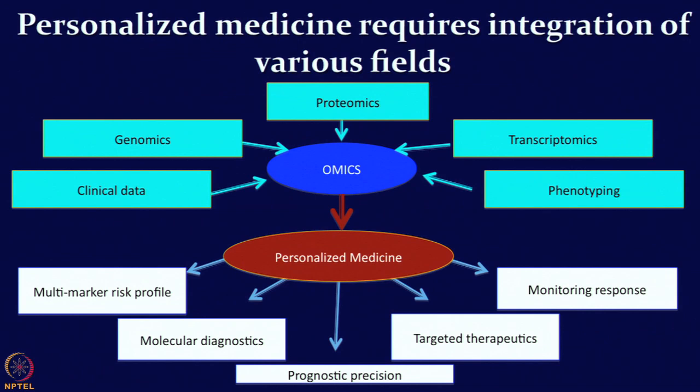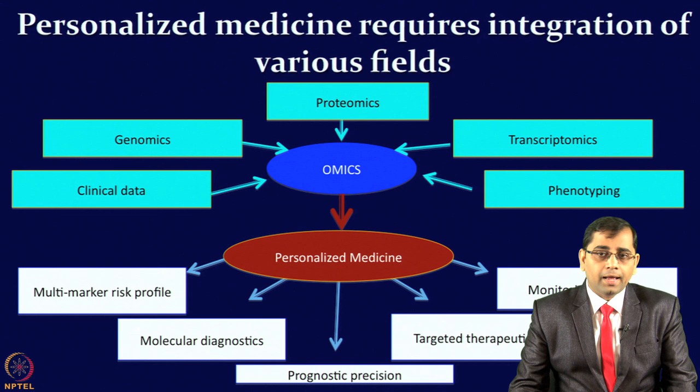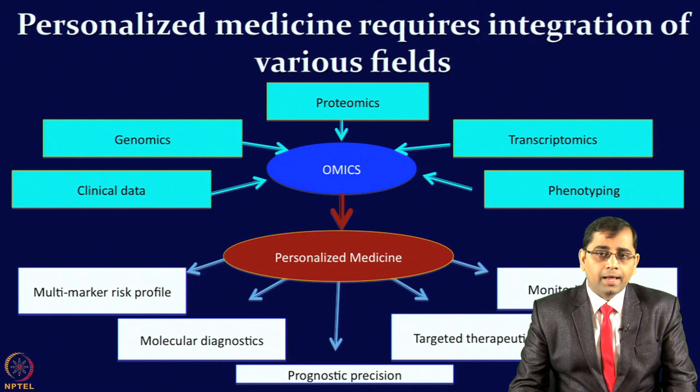If we are looking at complex physiological systems, we have to consider all possibilities across different types of biomolecules. For example, to capture the actual physiological consequence, we should look at the genome, the transcriptome, the proteome, as well as clinical information and phenotyping of individuals — all of this comes under the field of omics.